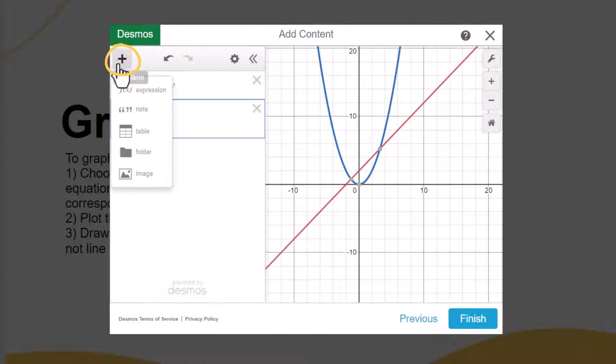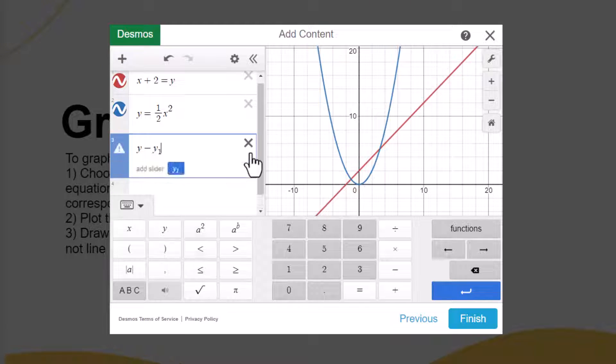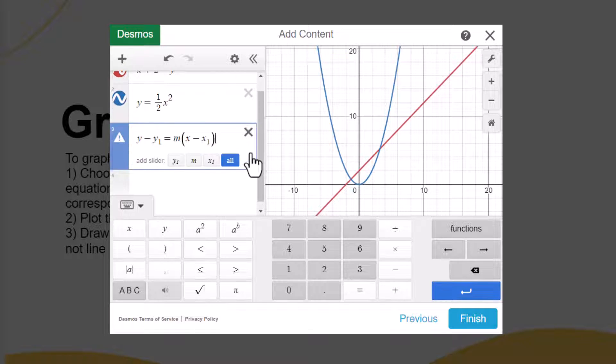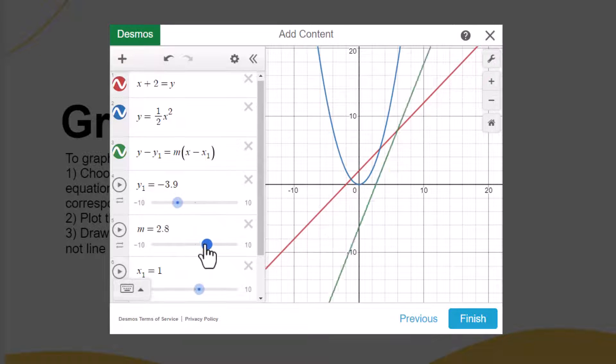In the top left-hand corner, use the plus button to add additional expressions, tables, and even images. You can create relationships with variables and add sliders for students to explore functions.